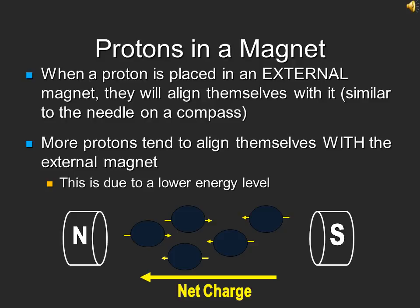However, when these protons are placed in an external magnet, they will align themselves with the magnet, like a compass pointing north. In the external magnetic field, the protons will either be pointing in the same direction as the magnet or in the opposite direction. Our net charge is created by these protons because more protons will point in the same direction as the magnetic field due to its lower energy level. To picture this, think of walking in the wind — it takes less energy to walk with the wind than to walk against the wind.